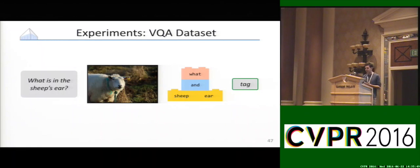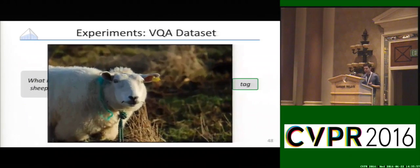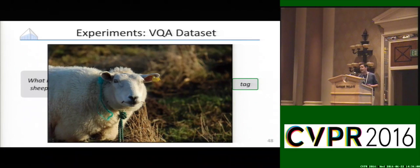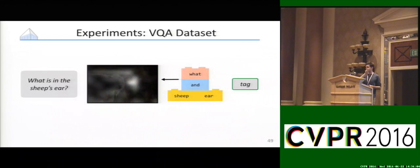Here's a slightly more complicated example. The question is 'what is in the sheep's ear,' and we've predicted a network that involves doing some conjunction and looking at various parts of the sheep. Just to zoom in so that you can see, the thing that's in the sheep's ear is a tag. Our model correctly predicts tag, and once again, it's decided to focus on the right region of the image in that final attention that gets passed up to the top module.